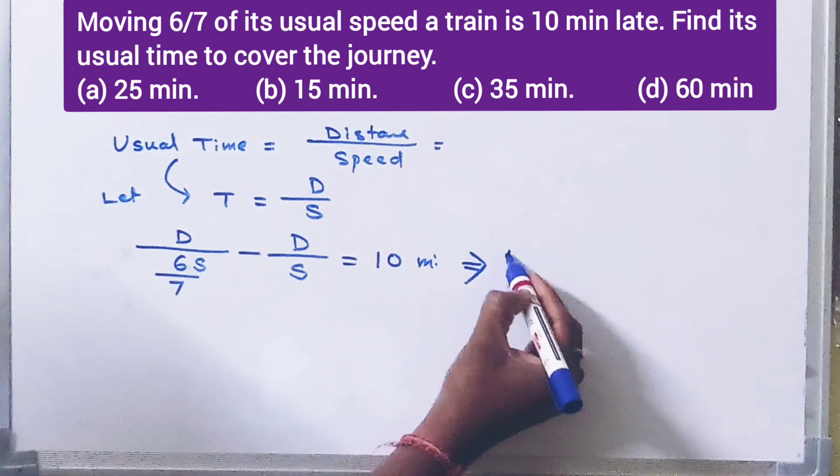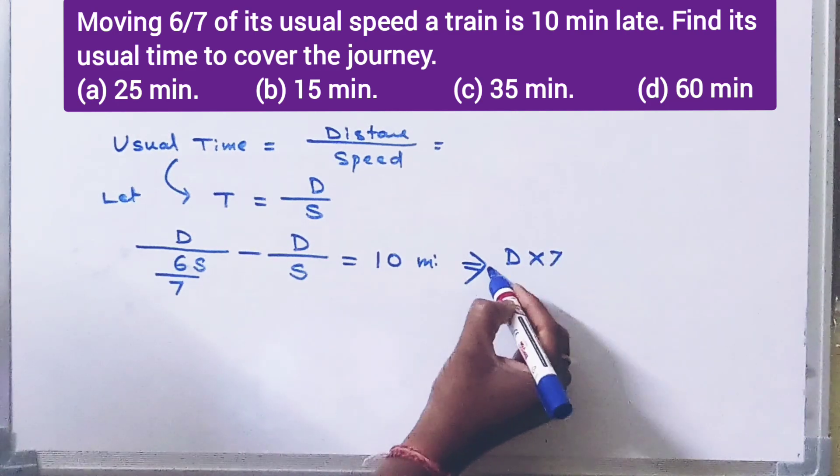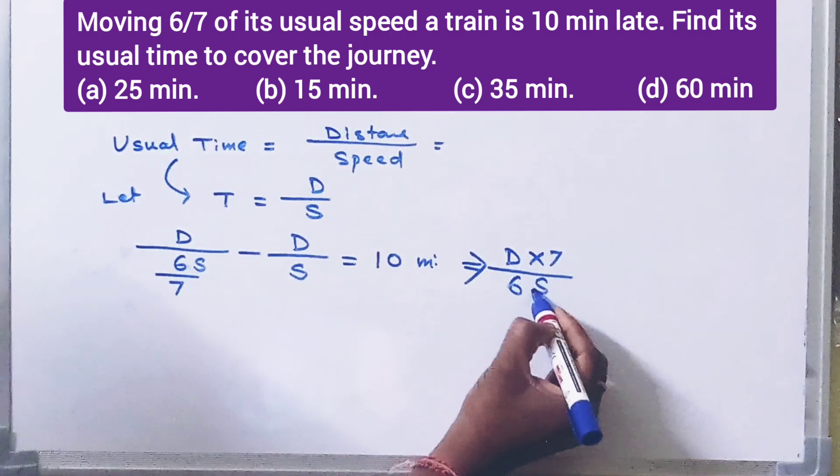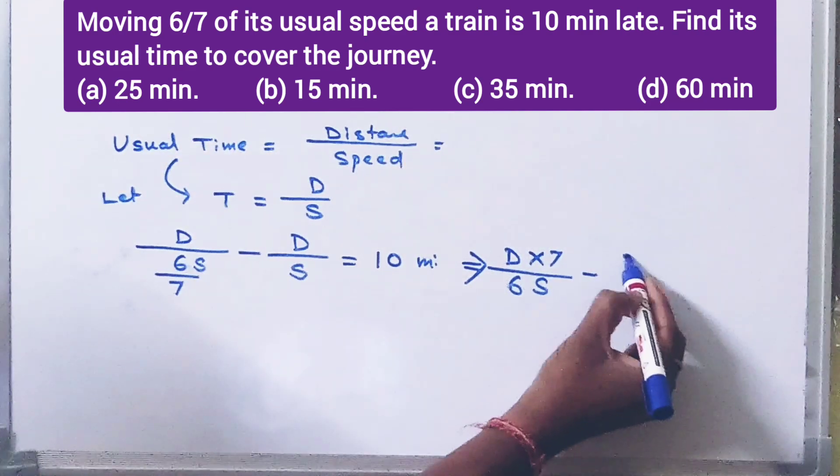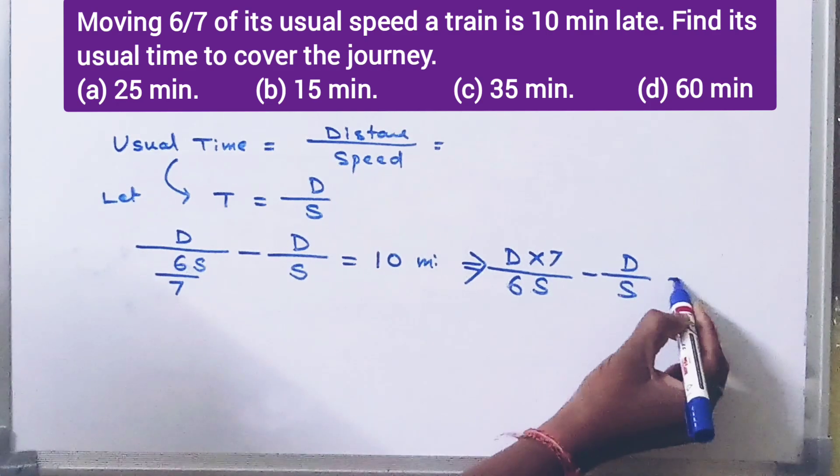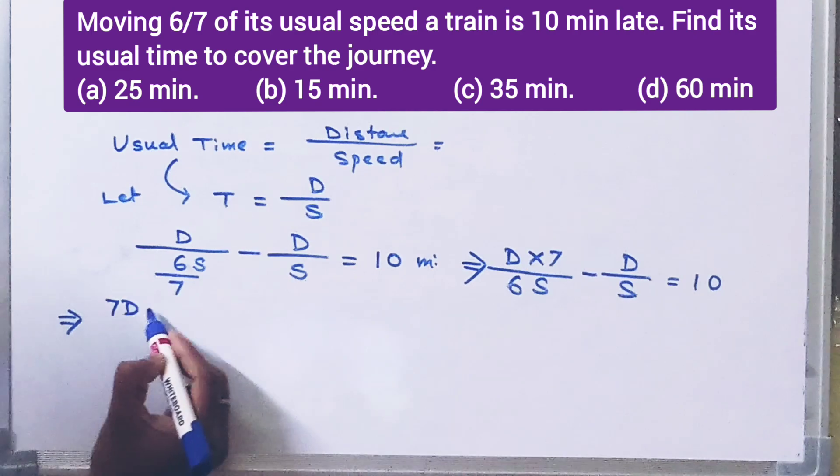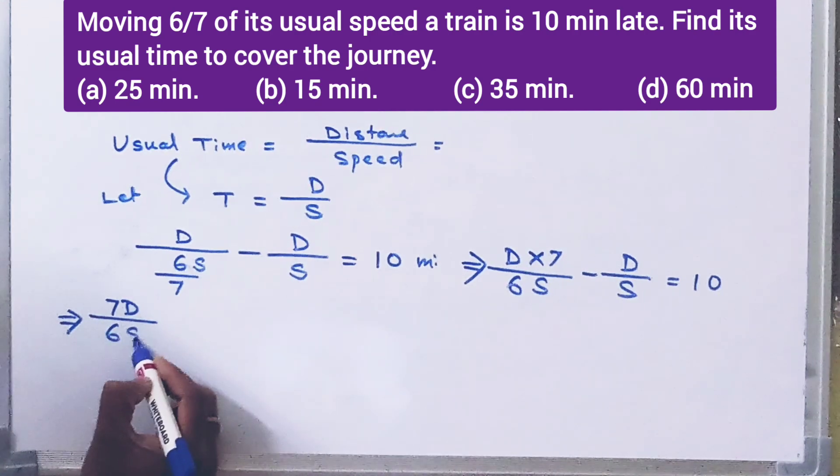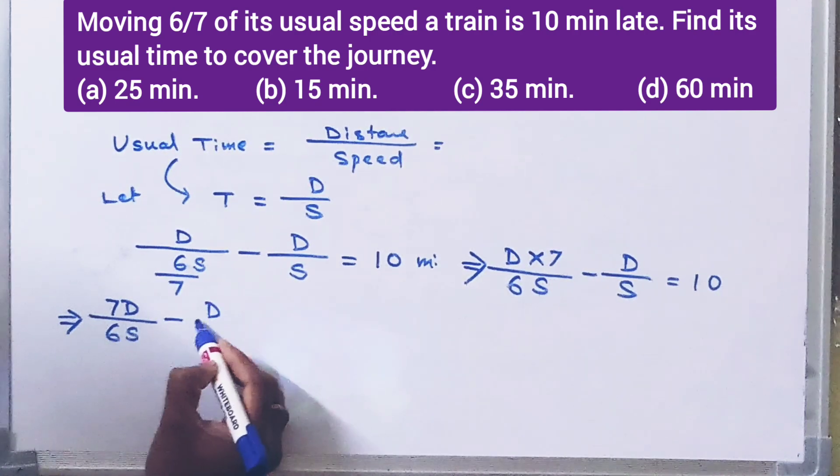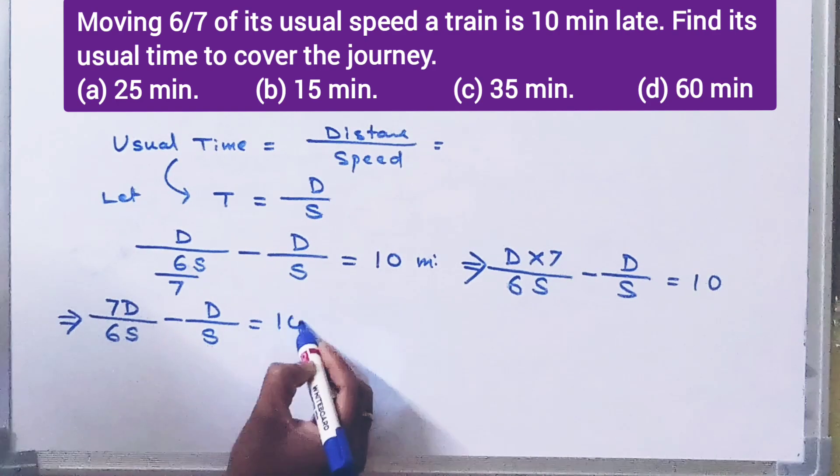Then, D into 7 by 6S minus D by S is equal to 10 minutes. Then, 7D by 6S minus D by S is equal to 10.